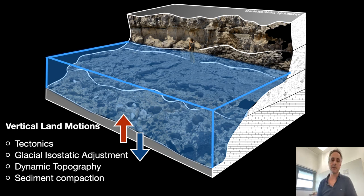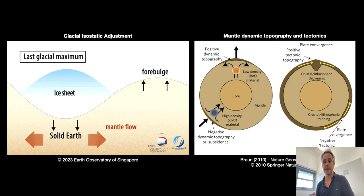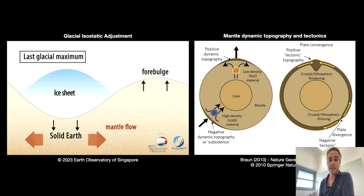We have to take into account several players. When we look at passive margins especially, the main things we have to account for are, of course, glacial isostatic adjustment. Studying the Pliocene especially, we understood that we need to look into mantle dynamic topography. And of course, if we look at active margins, we must look at and correct for tectonics.